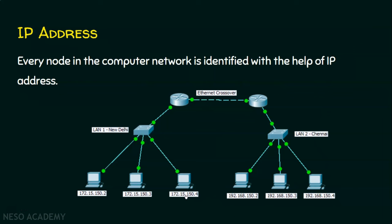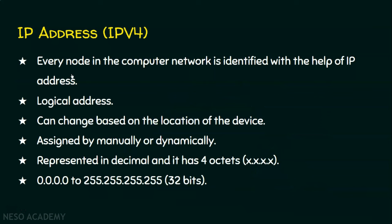I can simply remove this IP address and assign an IP address in that range. For example, this computer is assigned 192.168.150.2, another is 150.3, and another is 150.4. So I can take this computer, place it here, and assign it as 192.168.150.5, thereby making the newcomer participate in the local area network. Since IP addresses can be changed based on the logic or the location, we call IP addresses logical addresses. IP addresses are logical addresses because we can change the IP address based on the location of the device.